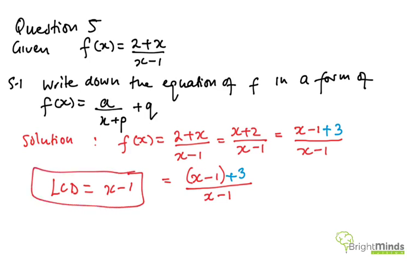Okay, if I take x minus 1 as an LCD, therefore I can break down the numerator as x minus 1 all over x minus 1 plus 3 over x minus 1.